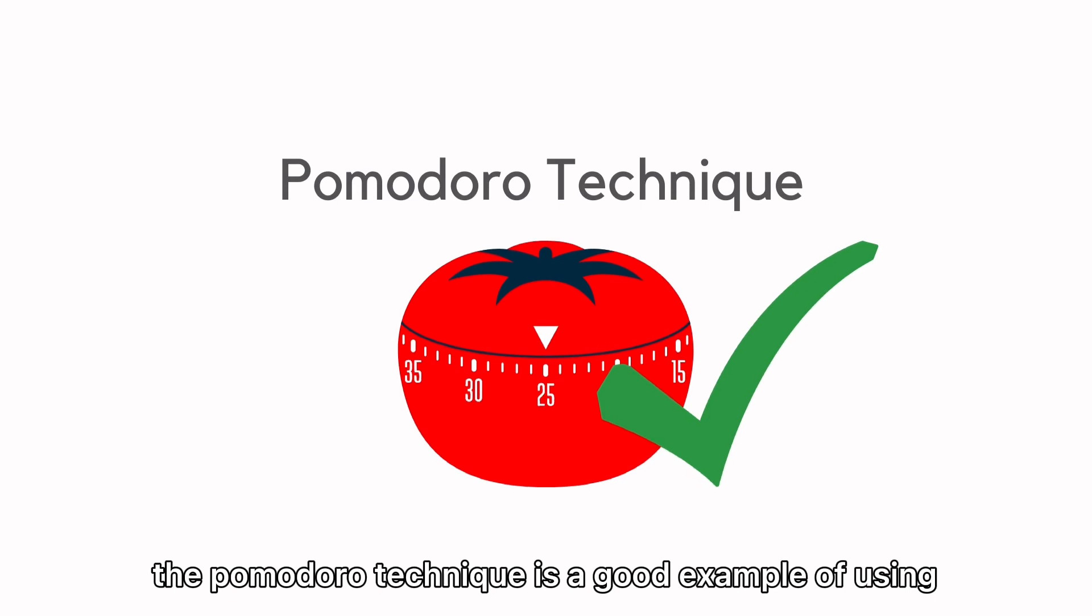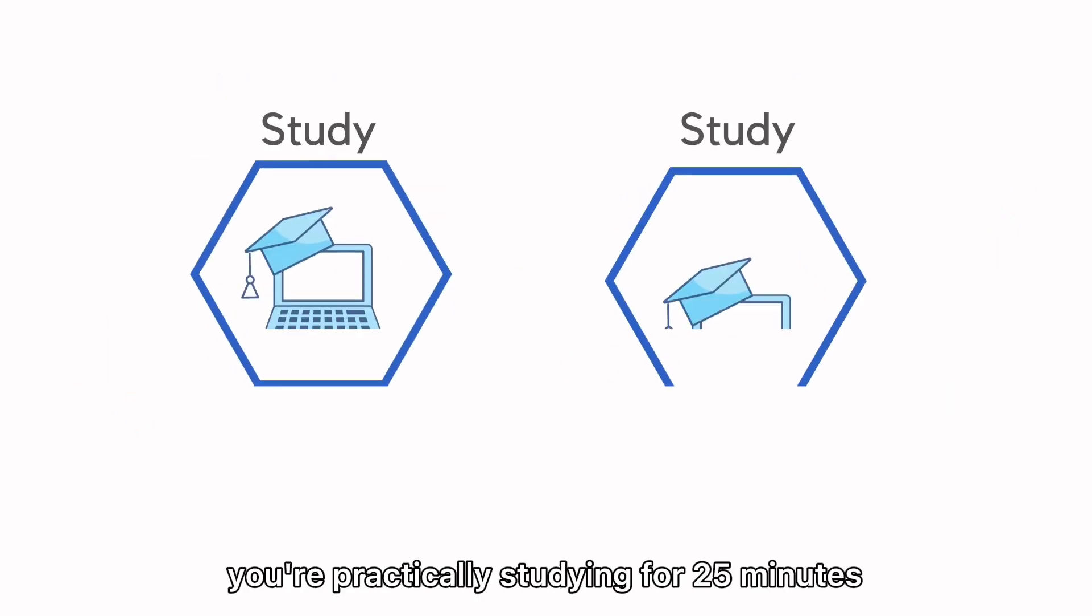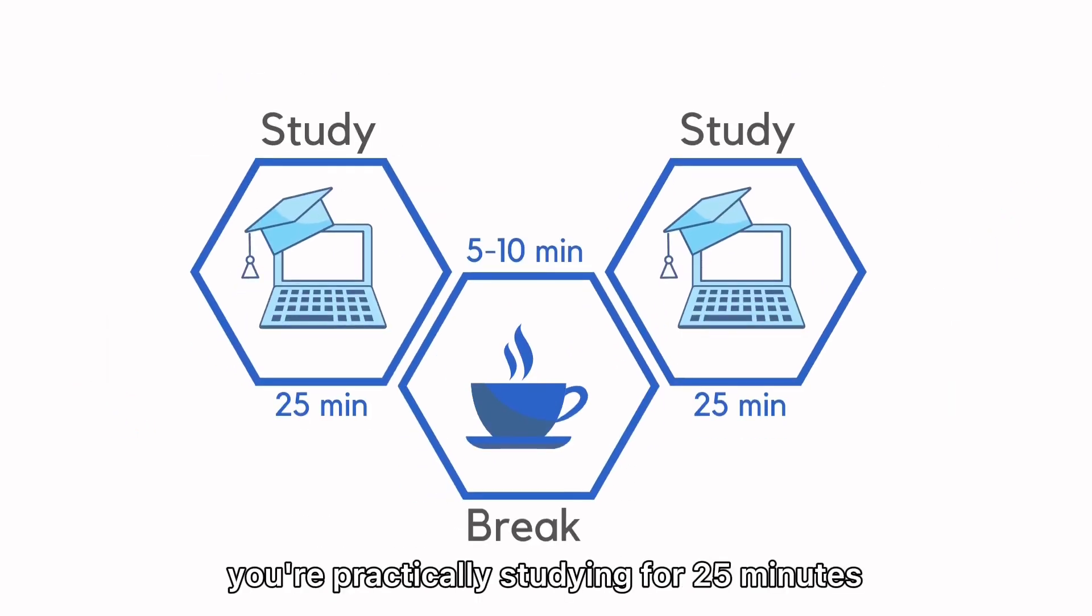The Pomodoro Technique is a good example of using study breaks effectively. It helps to minimize distractions and focus on the given task. You're practically studying for 25 minutes and just taking a break for 5 to 10 minutes.